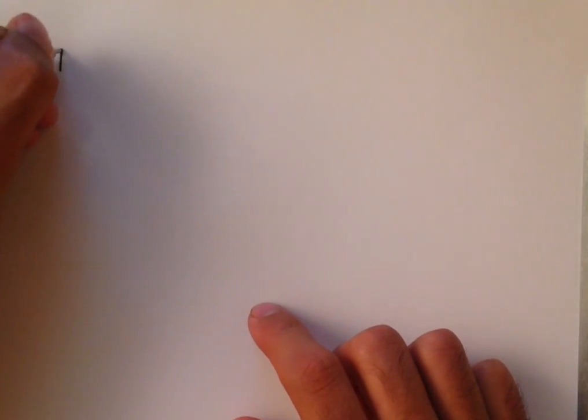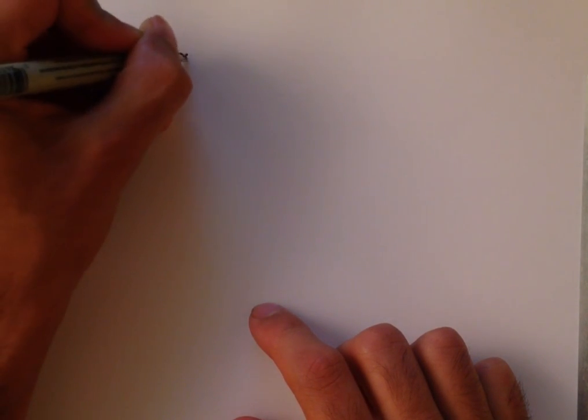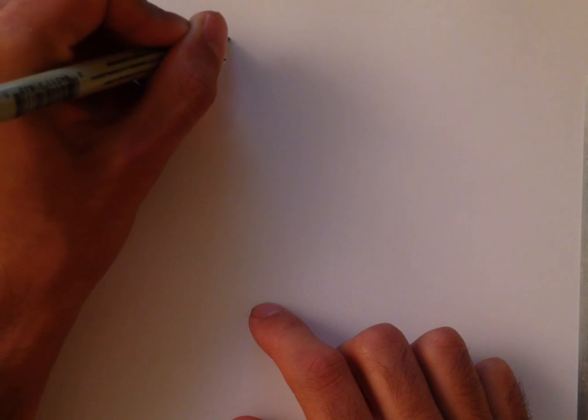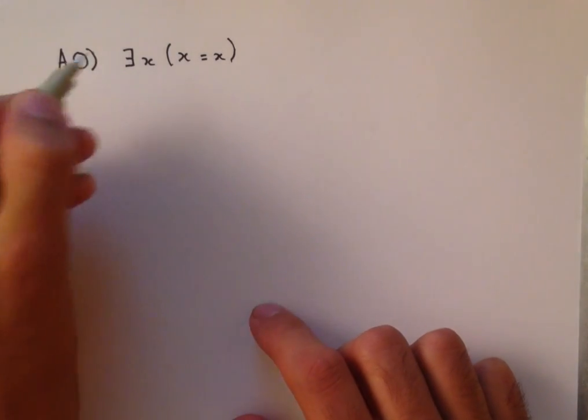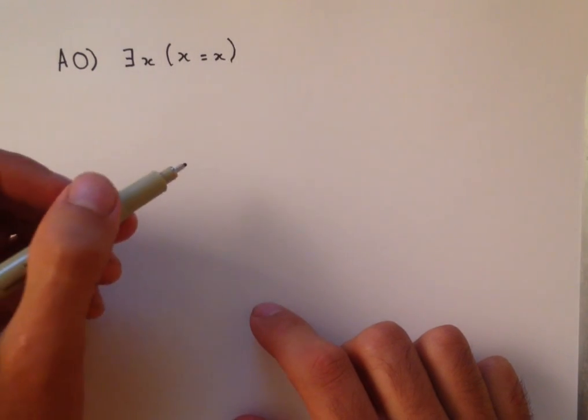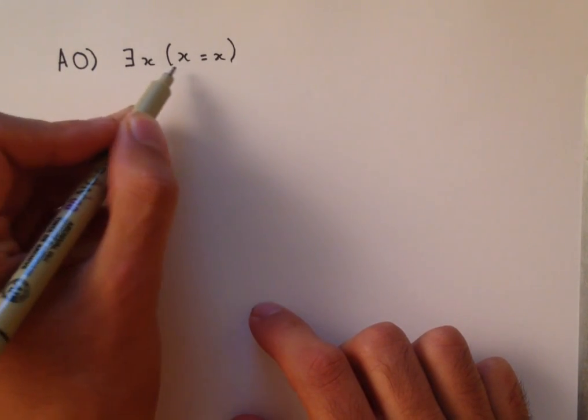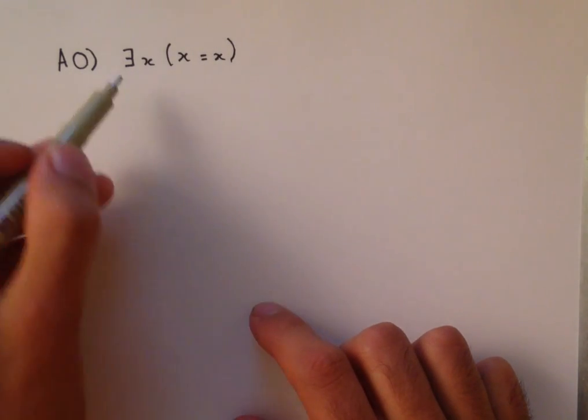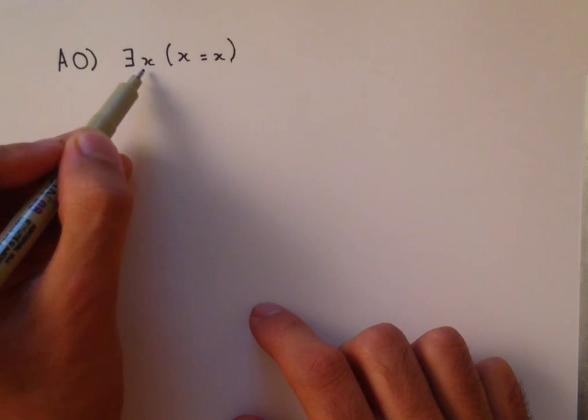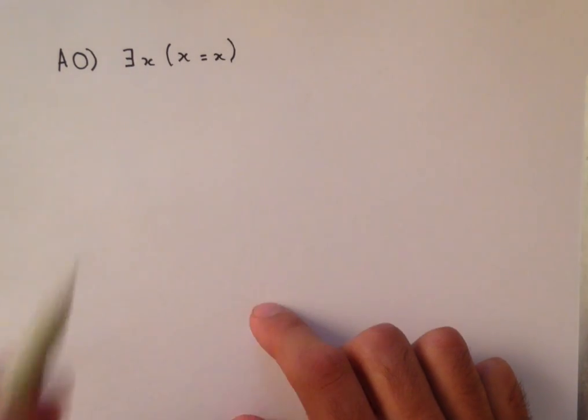The first axiom, axiom 0, is set existence. There exists x such that x equals x. So this backwards e symbol means there exists, and everything that goes in these parentheses is the thing that we claim exists to satisfy.